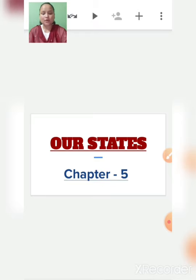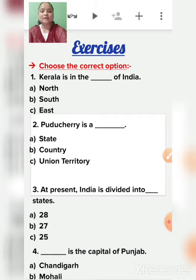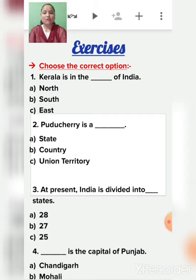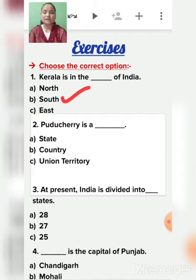Now let's do the exercise. Choose the correct option. First: Kerala is in the dash of India - north, south, or east? Kerala is in the south of India.